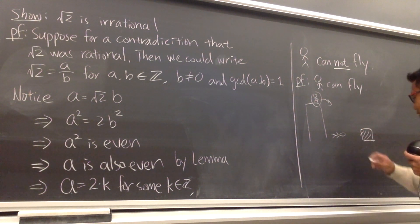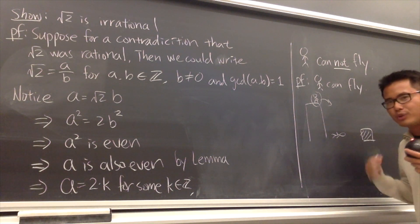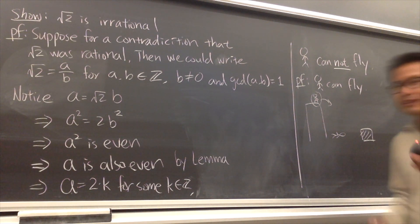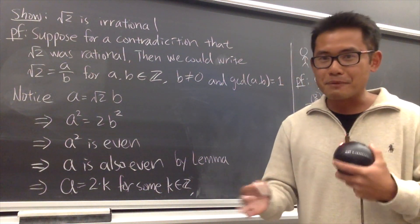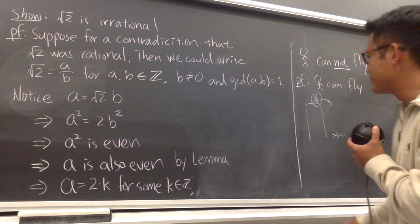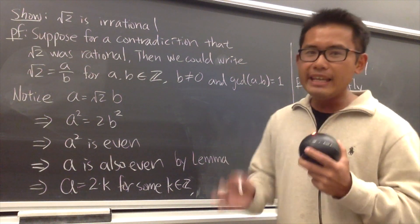And by the way, whenever we are done with the proof, we draw a square and then shade it in. Or we can put on QED, but I like this much better. So once again, if somebody thinks that they can fly, you can prove to them - no, don't do that.